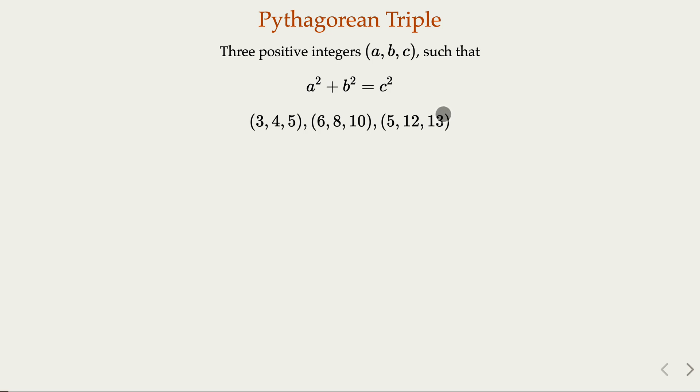A lot of times we care about what is called a primitive Pythagorean triple, that is a, b, c are relatively prime. In this case six eight ten, they're not. They have common factor of two, as a matter of fact that is just double of three four and five.